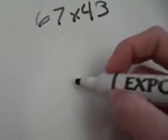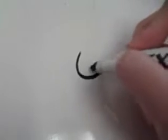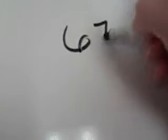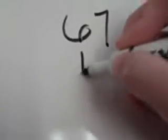In the shortcut method, the first thing I'm going to do is write the numbers on top of each other, 67 and 43.